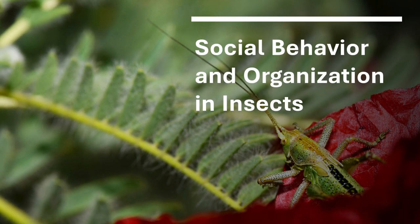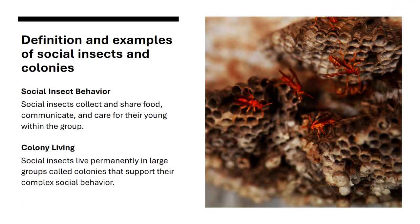Many insects show social behaviors and live in colonies, working together for the benefit of the group. Social insects collect and share food, communicate, and care for their young within large groups called colonies, supporting their complex social lives.